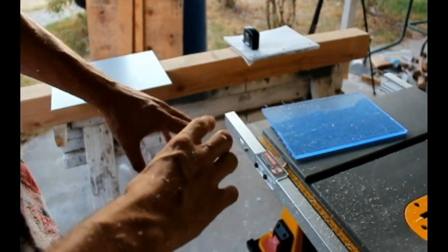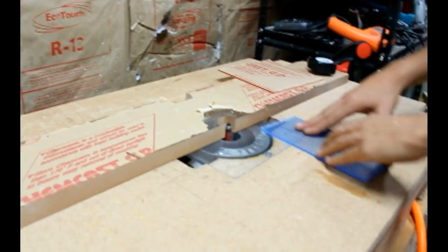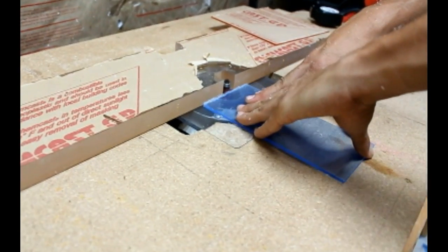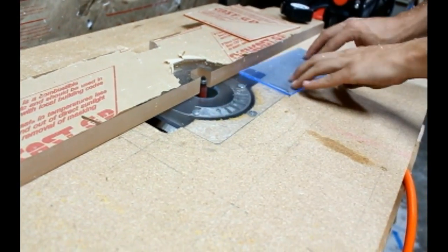We removed the saw cuts from our sheets with the calibrated fence router setup. Standard half inch trim flush bit is used here. A detailed video on making and calibrating this unit can be found in the description below.